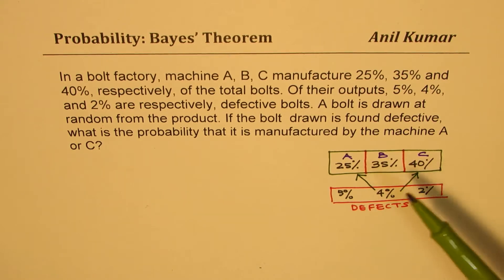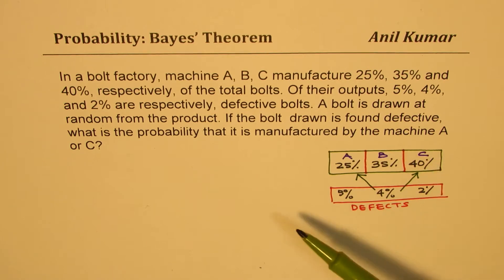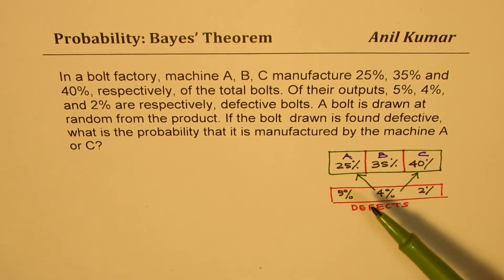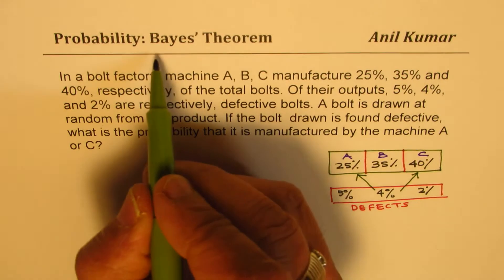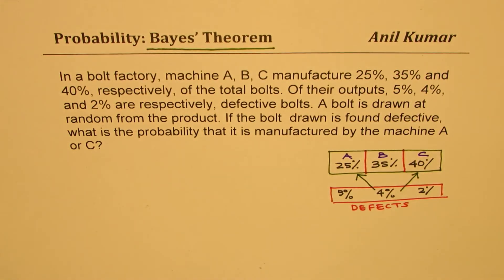Whenever we have a sample space which has been divided into parts, none of them overlapping, and we need to figure out from where the defect came, exactly the situation we are working with, we can use Bayes' theorem. So this is an ideal candidate for Bayes' theorem. In this, we work in two parts.